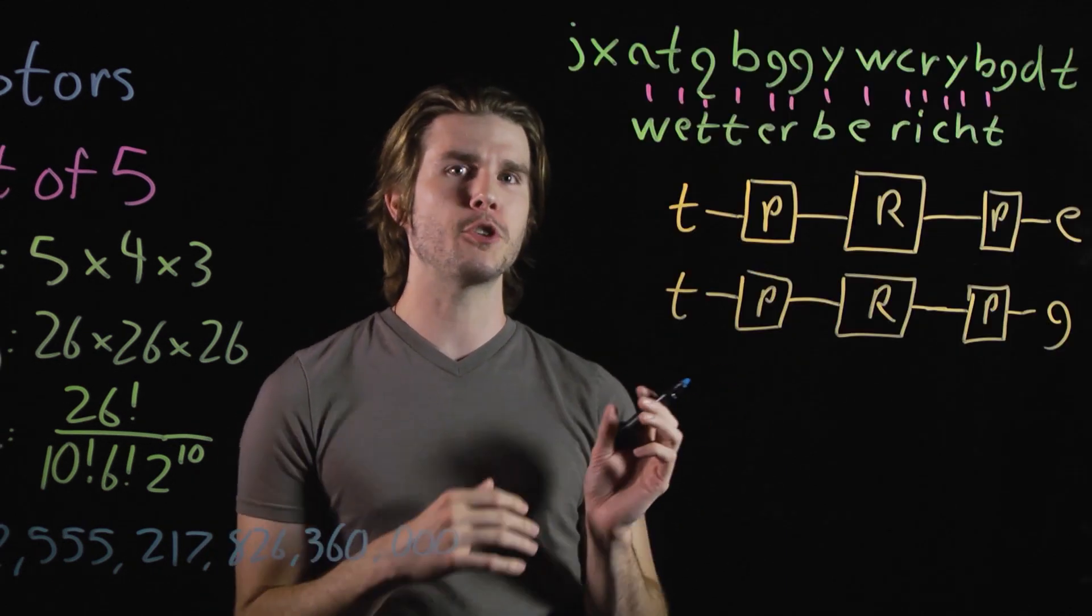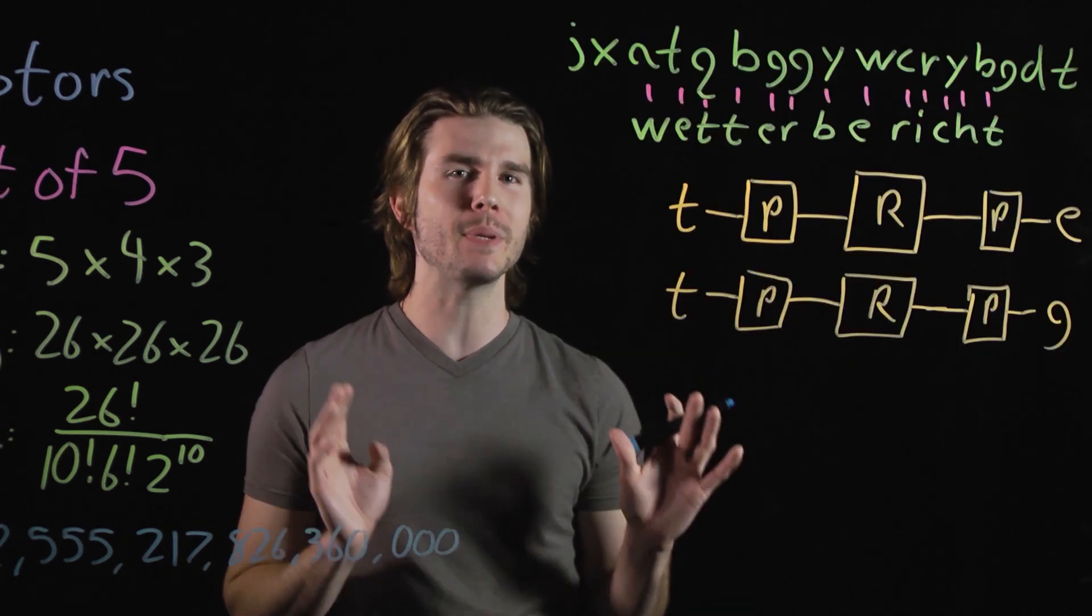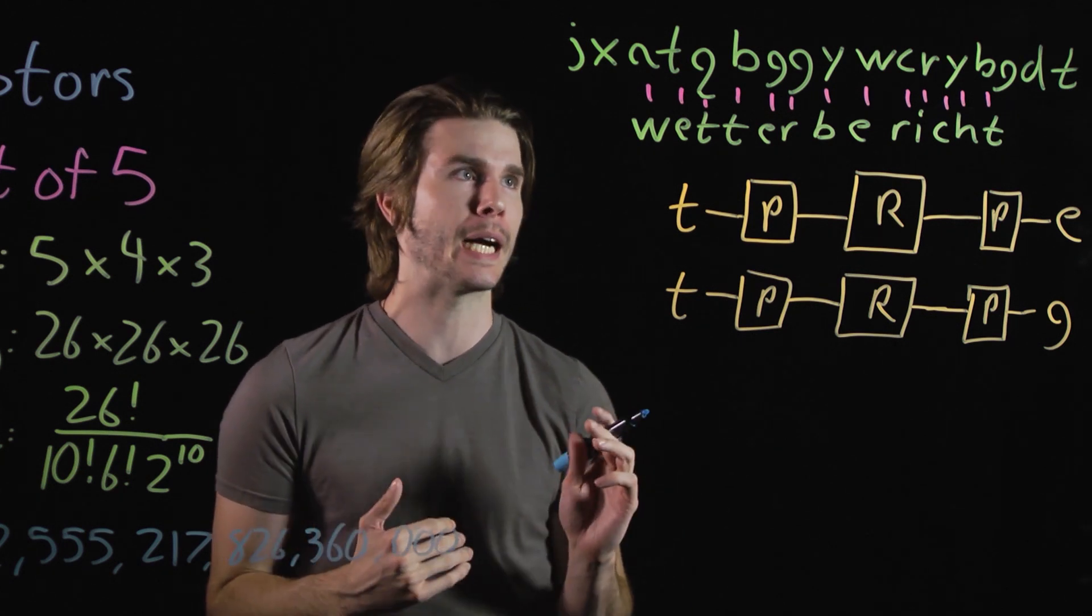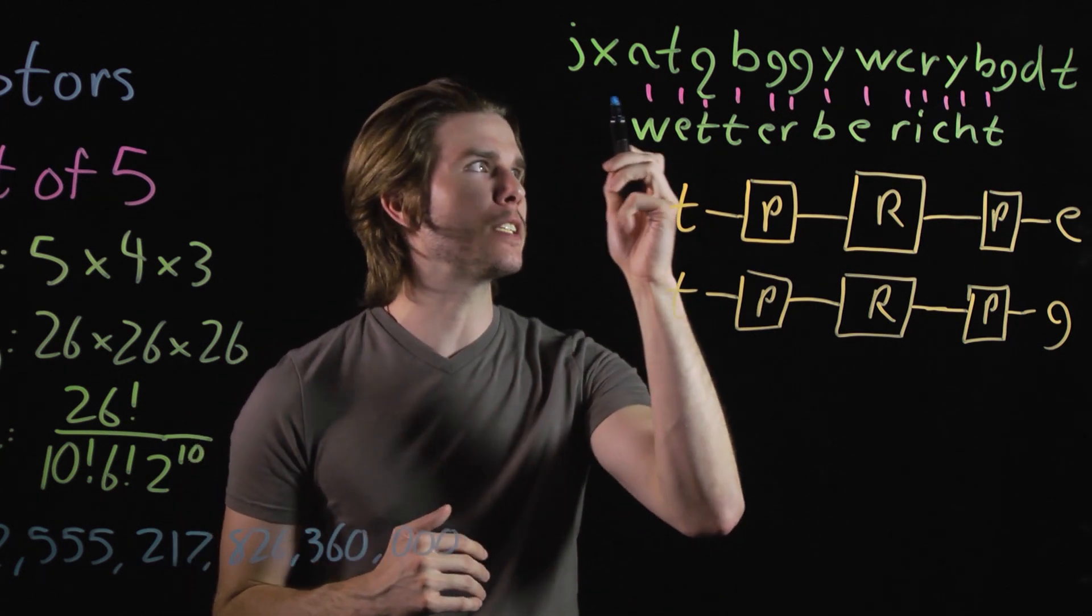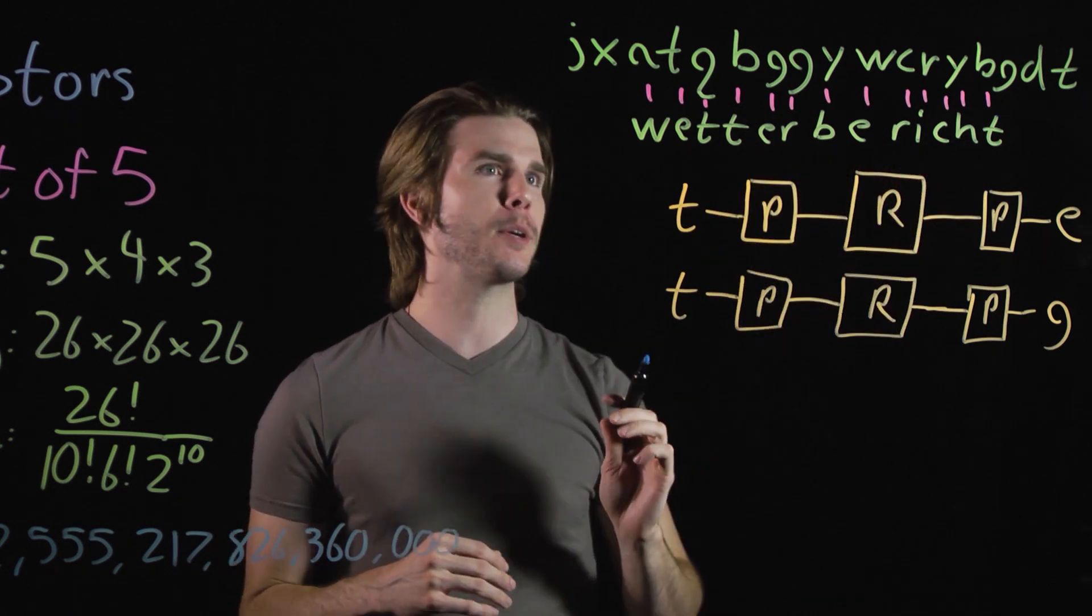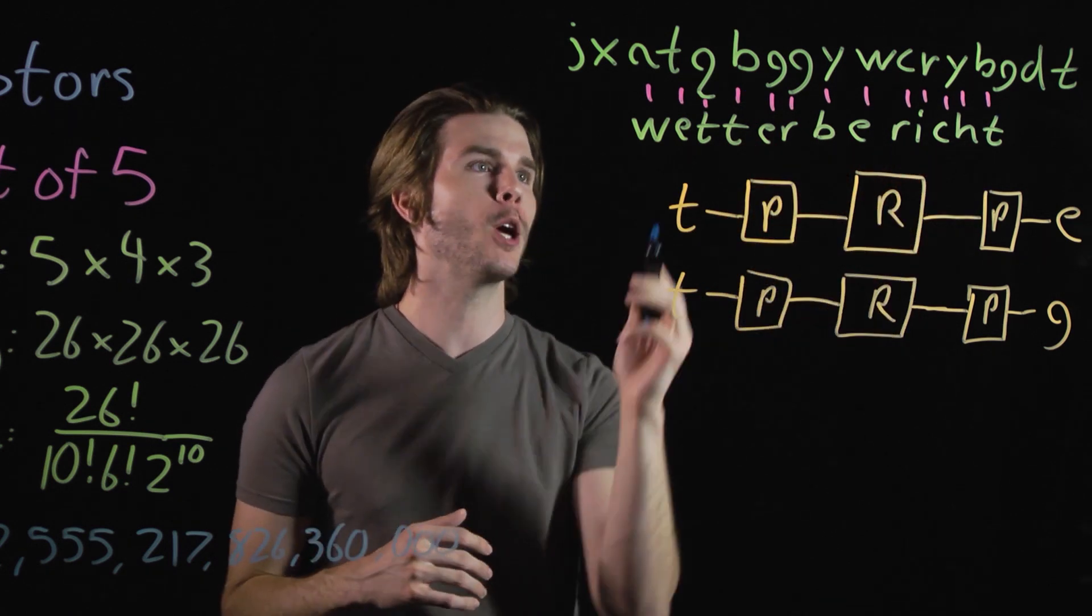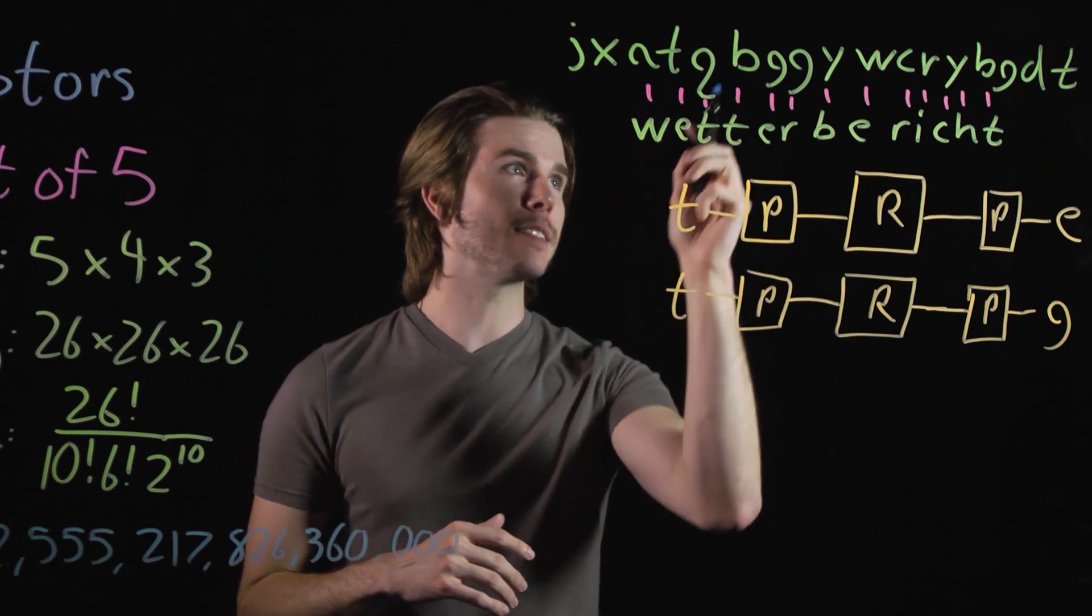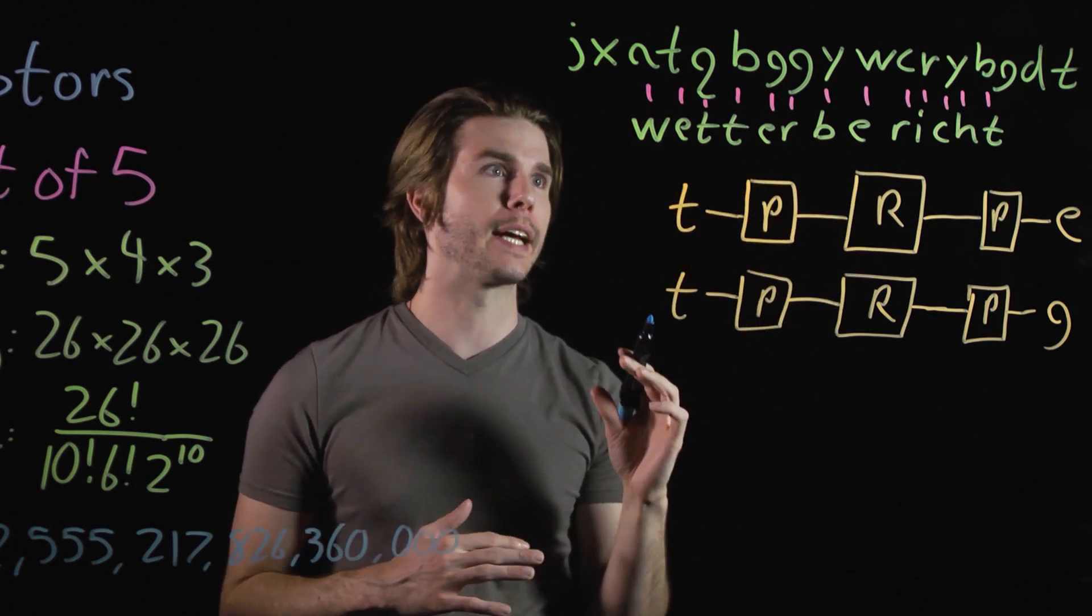The first thing that you'd have to do is guess some phrase that might be in the encrypted messages that the Allies got from the Germans by spying on them. So you'd get this encrypted text, which is basically gibberish, but let's guess that maybe Wetterbericht, or weather report in German, lines up right here. It's a good guess.